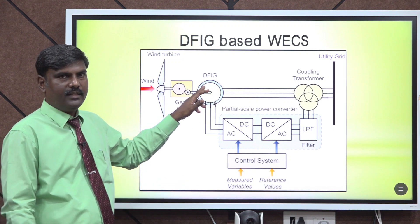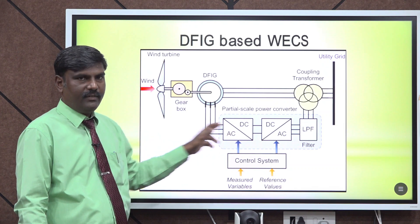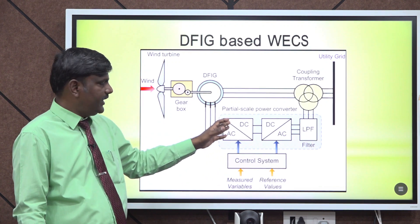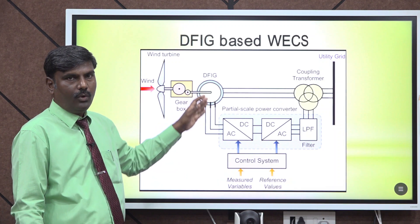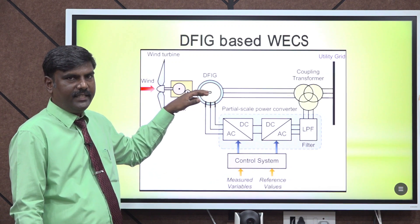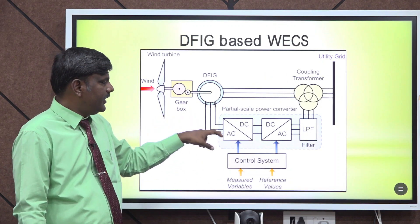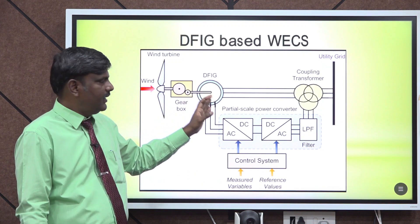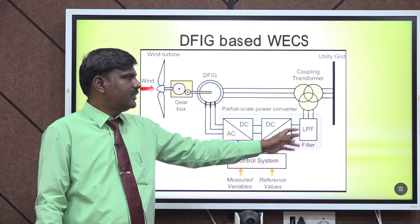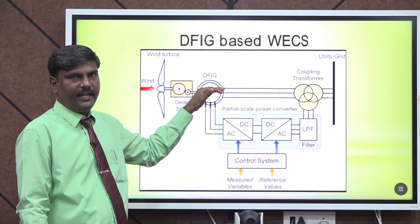To maintain the speed of the rotor as constant, power from the grid is fed to the rotor through these converters — the AC line is converted into DC power and then this DC power is again converted into AC power and it is fed to the rotor of the doubly fed induction generator. If you want to reduce the speed, you can extract the rotor power and deliver it to the grid. The AC to DC converter extracts power from the rotor, converts it into DC, then DC power is again converted into AC and fed to the grid, thereby maintaining the speed of the doubly fed induction generator as constant.